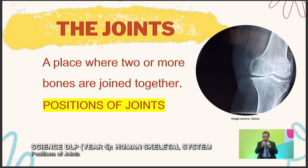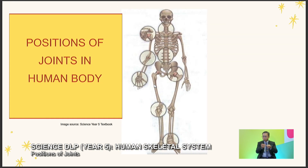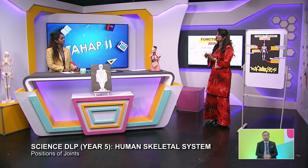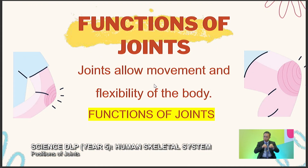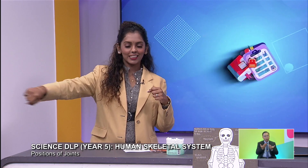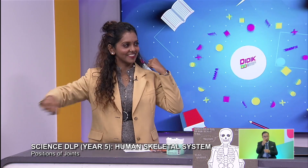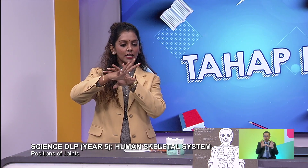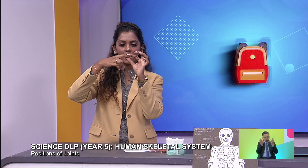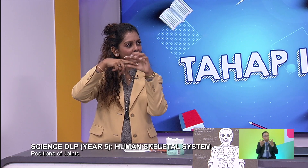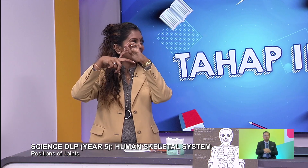Next, we are going to learn about the position of joints in the human body. Joints can make us move. If you want to move your hand — like that — there are a few joints working there. There's a joint at the wrist, and even your fingers have joints. There are a lot of movements. Even one finger has three joints.